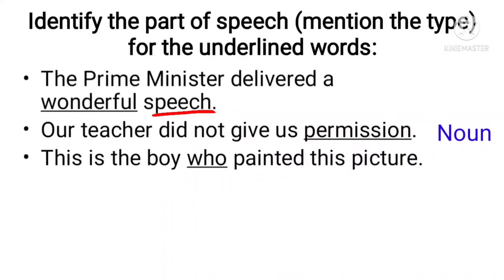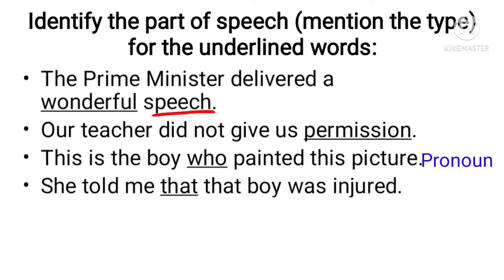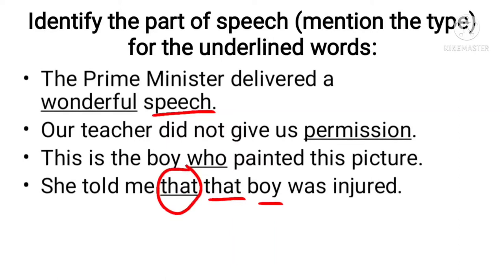'This is the boy who painted this picture.' And: 'She told me that that boy was injured.' In the second sentence, the first 'that' is a conjunction because it is linking two clauses, so it is a subordinating conjunction. The second 'that' before a noun acts as an adjective.